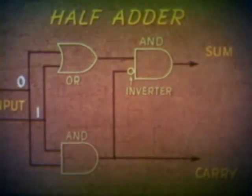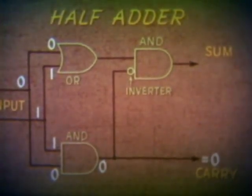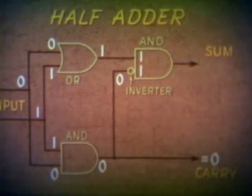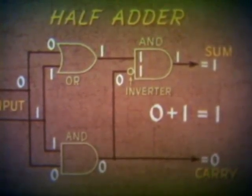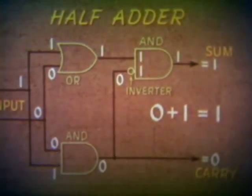A zero and a one as inputs will put a zero and a one into each of the gates. The AND gate output will thus be zero, which is then the carry output. The inverter changes the zero to one. At the OR gate, zero and one produce a one output, which is the input to the AND gate. The output of this AND is therefore one, and so is the sum output. Thus zero plus one equals one, and the addition rule is observed. You might note that reversing the inputs would make no difference, since both of them enter both input gates.